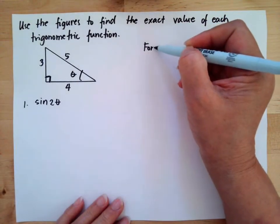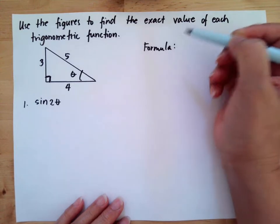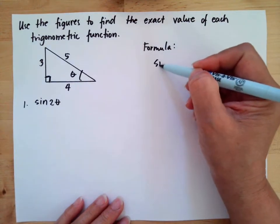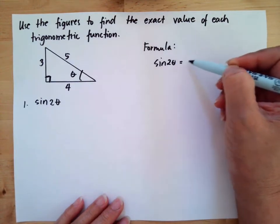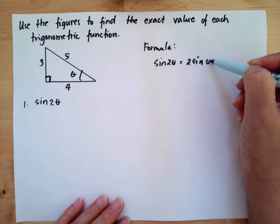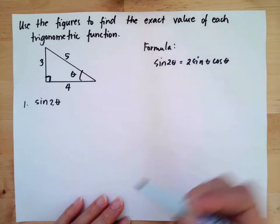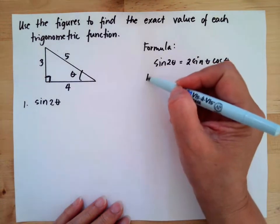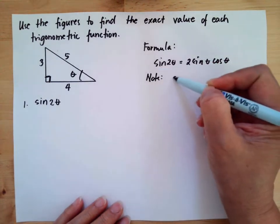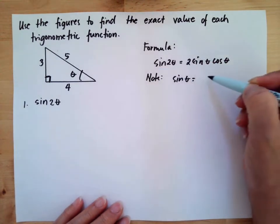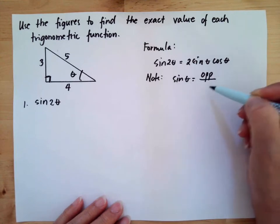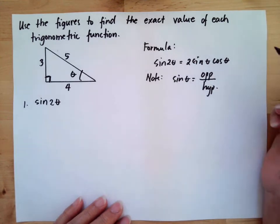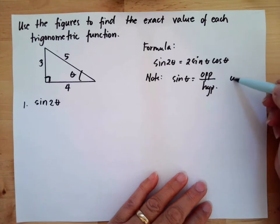The identity we're using is sine 2 theta equals 2 sine theta cosine theta. Note that sine theta equals opposite over hypotenuse, and cosine theta equals adjacent over hypotenuse.